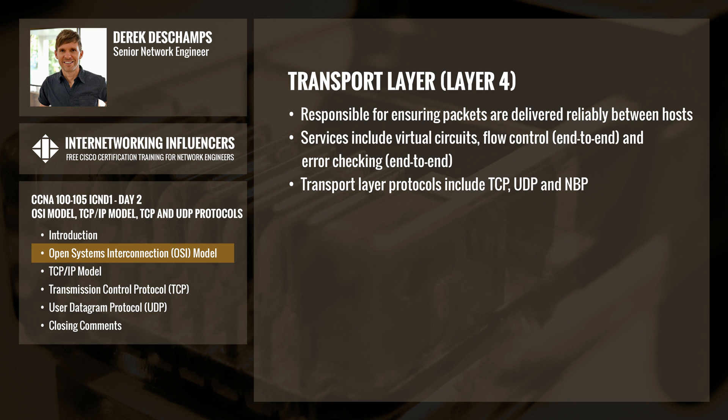The transport layer, or layer 4, is responsible for ensuring packets are delivered reliably between hosts. Examples of transport layer services include virtual circuits, as well as end-to-end flow control and error checking. Protocols such as Transmission Control Protocol, or TCP, User Datagram Protocol, or UDP, and AppleTalk's Name Binding Protocol, or NBP, all belong in this layer.